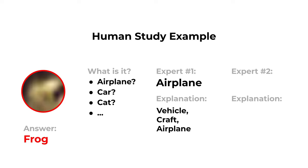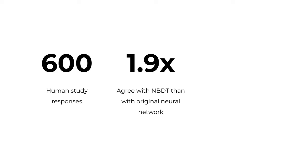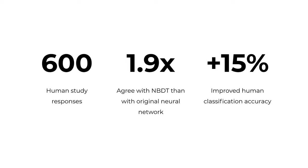Users may agree with MBDT, agree with the neural network explained by a saliency map, or ignore both. Of 600 responses, participants trust and agree with MBDT twice as often as the original neural network. Additionally, even though MBDT was wrong 70% of the time, human classification performance improved by 15% when they were given model predictions and explanations.